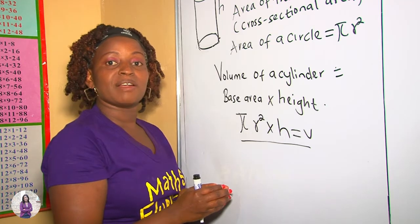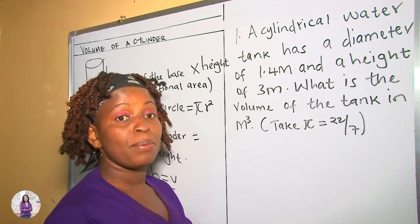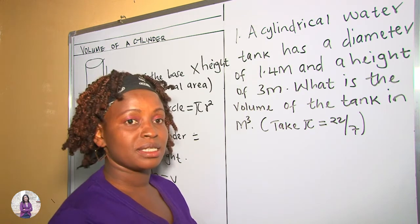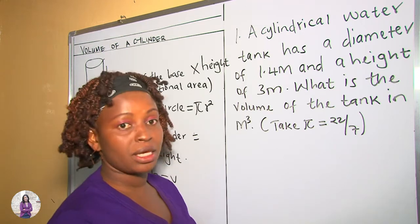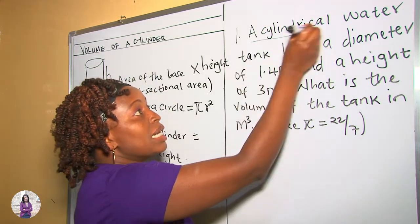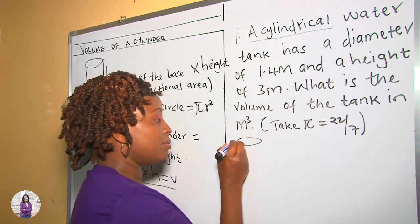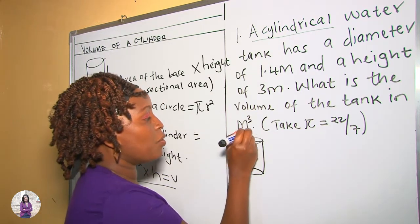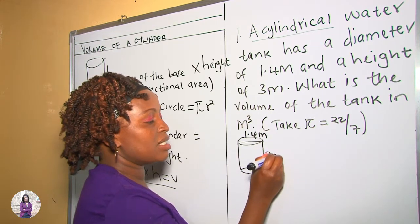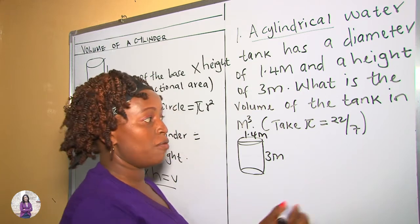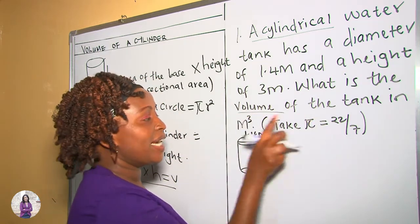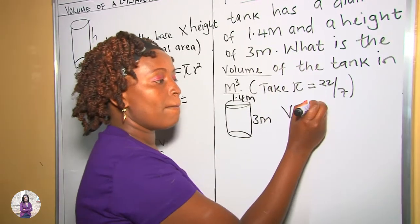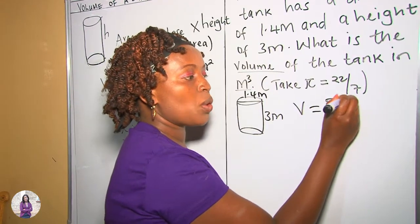Now, let's apply this formula in getting volume of a cylinder. In our first example, we are told that a cylindrical water tank has a diameter of 1.4 meters and a height of 3 meters. Since it's a cylindrical tank, it's a cylinder. We are given the diameter as 1.4 meters and the height as 3 meters. Therefore, let's apply the formula to get the volume, which should be in meters cubed. Volume of a cylinder is equal to cross-sectional area, which is pi r squared times the height.